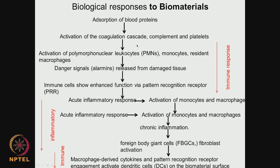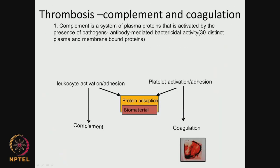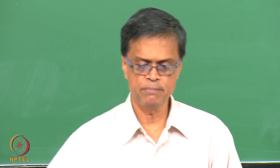This timeline of events could span several hours. Let us look at each one of these items in a little bit more detail. When the material is in contact with blood, two things happen: the complement and the coagulation. What is the complement? This is a system of plasma proteins that is activated by the presence of pathogens, involved in antibody-mediated bactericidal activity. These are formed and get activated when there are any pathogens or any foreign bodies.